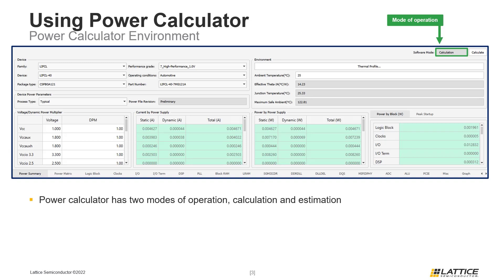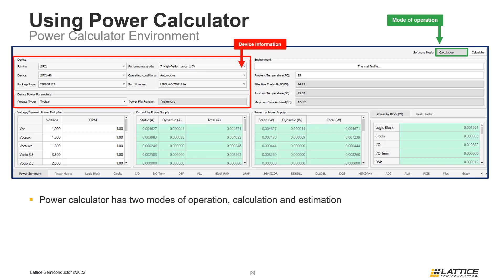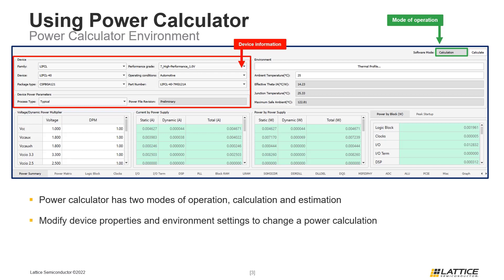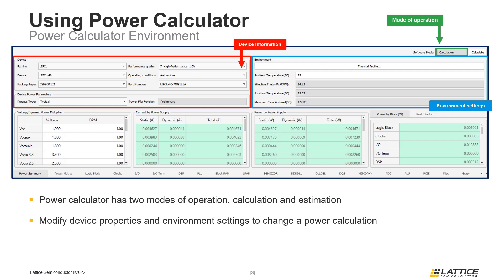On the left side of the Power Calculator window is the Device Information section. This section contains the device settings for the current Radiant project. Modifying any of the settings in this section will change Power Calculator's mode of operation to Estimation. Next to Device Information is the Environment Settings section. In this section, users can configure the Thermal Profile. These settings can be modified using the Thermal Profile button located at the top of this section. These Thermal Profile settings are used to set the Ambient Temperature and Junction Temperature settings, which are both used to calculate the power dissipation of a design.